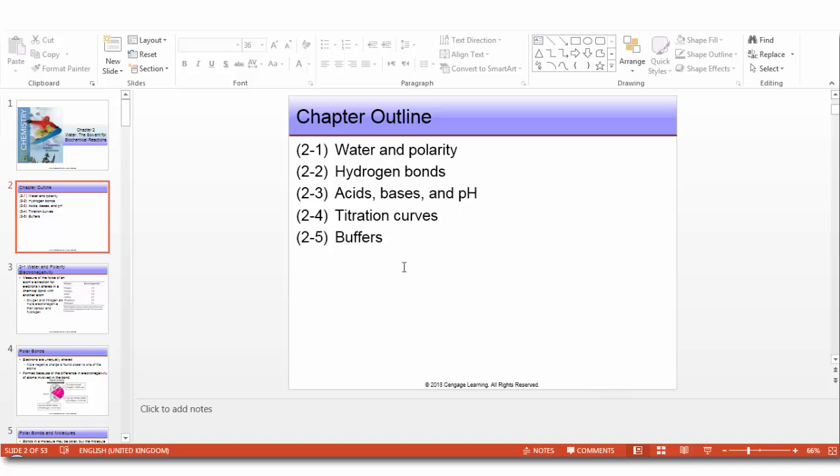This is the outline. We will talk about water and polarity session one, hydrogen bonds two, acid bases and pH three, then titration curves four, and finally buffers.